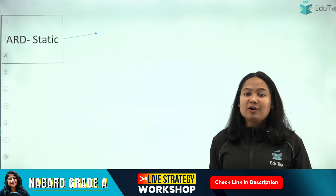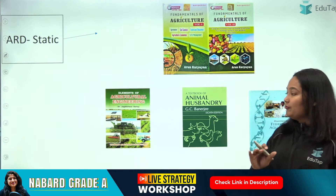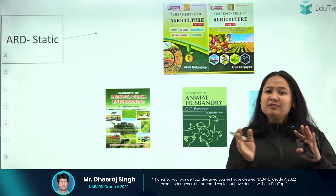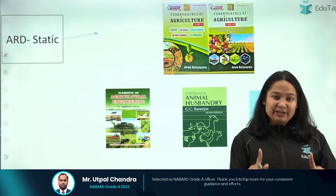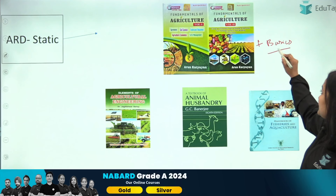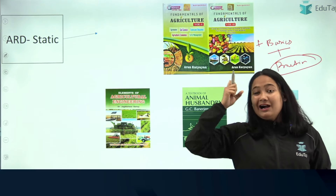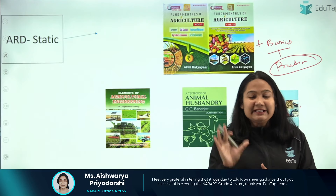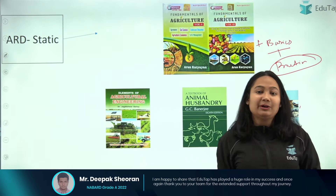Now coming to the merit section — ARD Static. We won't discuss current affairs here as there are no current affairs questions. For ARD, if you're a complete beginner in agriculture, I recommend going for Arun Katyan. If you know the basics or are from an agriculture background, you can refer to your own notes, and additionally Neemra Sunda. For beginners, Arun Katyan will help you build basics and give you good practice. Understanding ARD static is very important because questions won't just be direct lines from the book — they'll be based on your understanding, and NABARD has increased this trend.